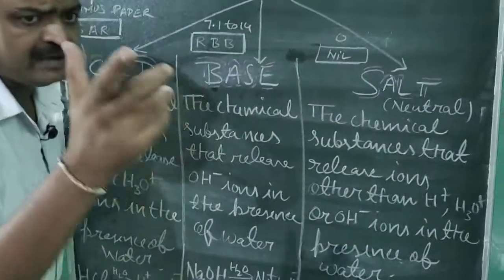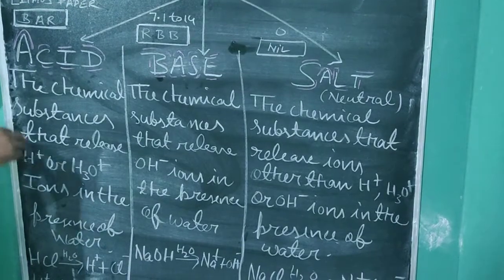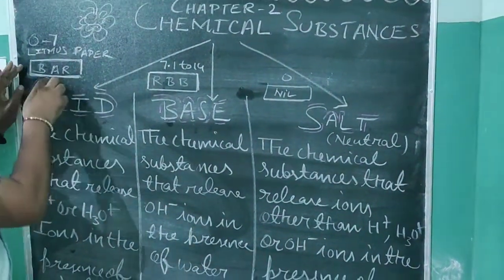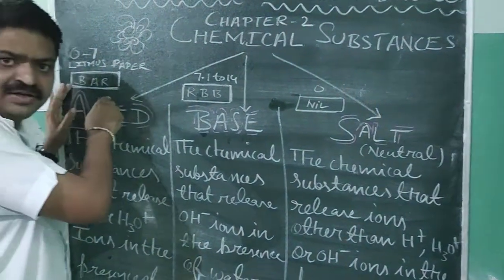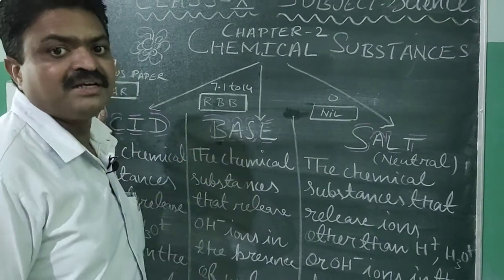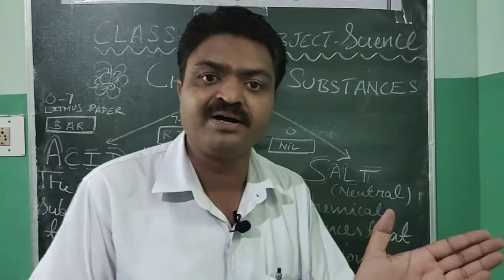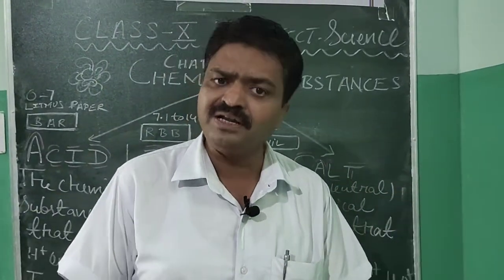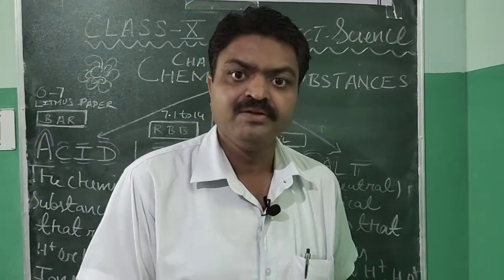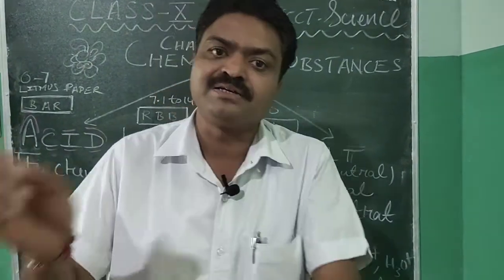How can we know the nature of these chemical substances? Here I have made one strip. This type of strip is also found in the laboratory and we call it litmus paper. That litmus paper is obtained from a plant that has a symbiotic relationship, and that plant is known as lichen. With the help of lichen, we get litmus paper as well as litmus solution.